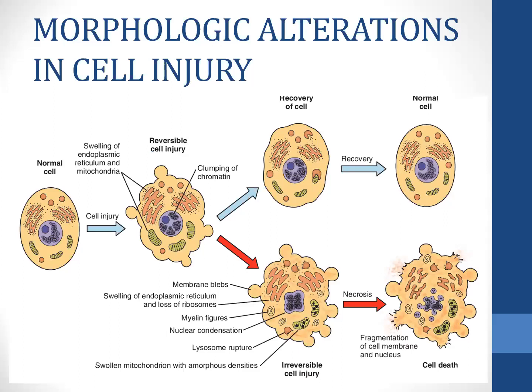The morphological changes in cell injury can be seen here. A normal cell undergoing reversible cell injury shows swelling of the organelles, swelling of the cell itself, and clumping of chromatin — changes which are reversible and the cell can revert to normal. In irreversible cell injury, the organelles swell up, lysosomes rupture, the cell membrane can also rupture, the mitochondrial membrane is affected, and these severe changes cannot be reversed. So in irreversible cell injury, the cell eventually undergoes cell death.